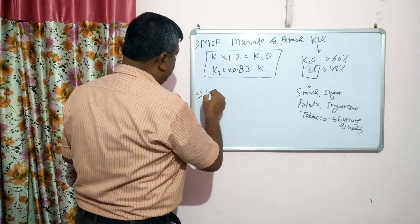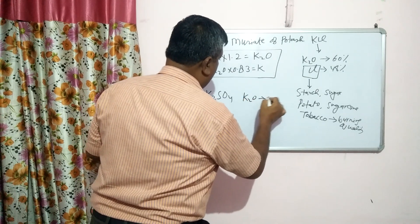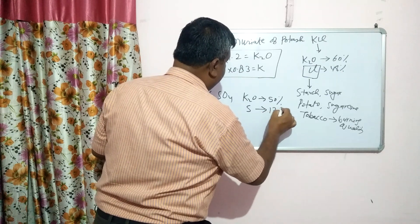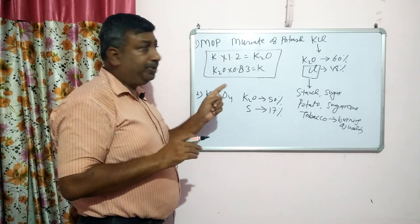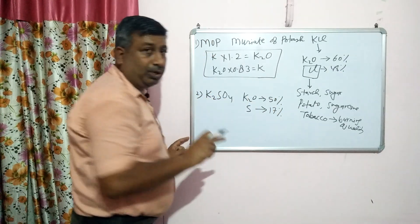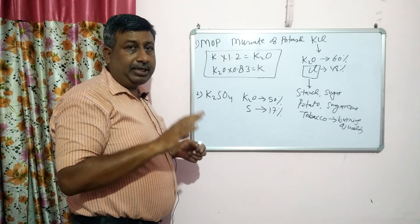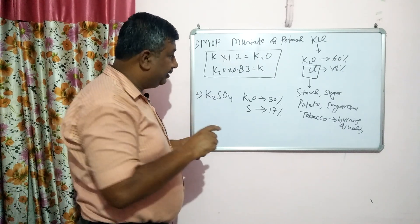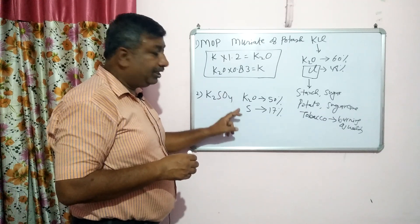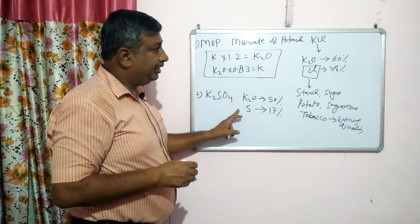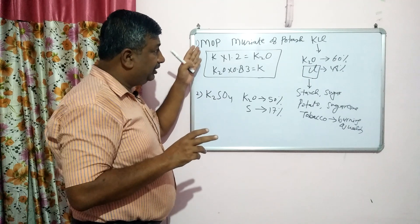In this case we use another fertilizer — potassium sulphate, formula K2SO4. It contains K2O about 50% and sulphur approximately 17%. So when applying MOP we get two essential nutrients: potassium and chloride. Potassium is a macronutrient and chloride is a micronutrient. Similarly, in potassium sulphate we get potassium and sulphur — both are macronutrients. So always remember that we get two essential nutrients from each of these two potassium fertilizers.